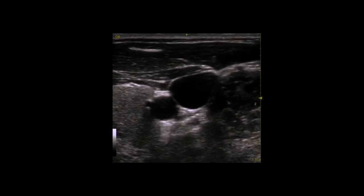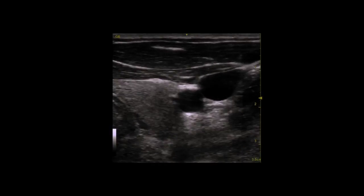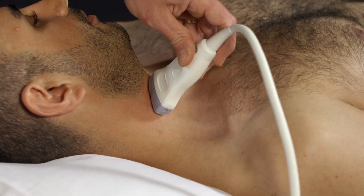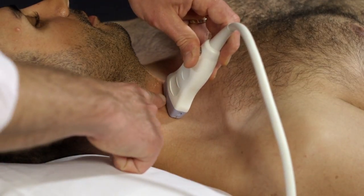Scan the vessels to find the optimal insertion site. Find an area where the vein is at its maximal size and away from an overlapping carotid artery. Mark this spot on the skin.